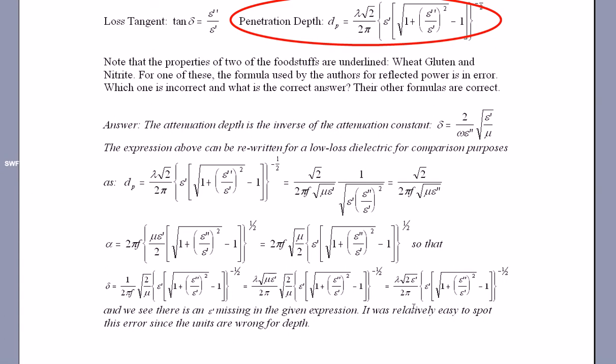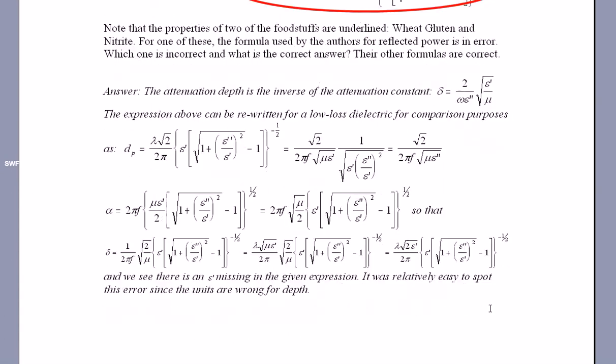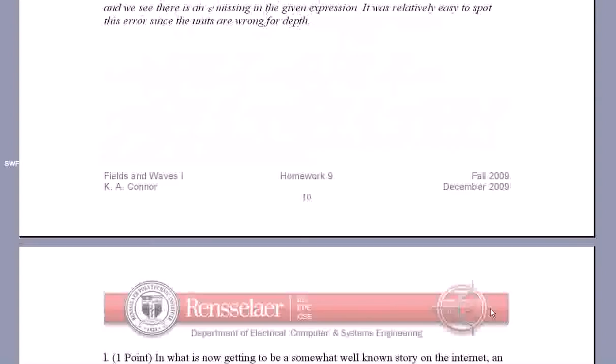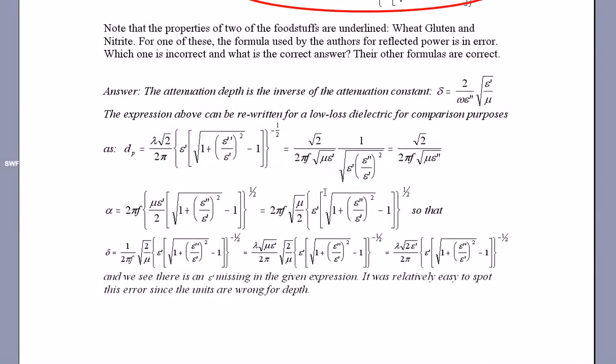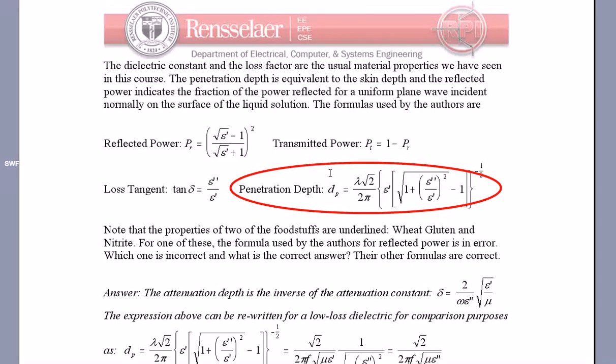And therefore delta is this expression here, and we see that there is an epsilon prime missing in the given expression. It was relatively easy to spot this error since the units are wrong for depth. So, we really didn't need to go through all of this mess here, because the units of this one are clearly correct, because it's just a ratio.